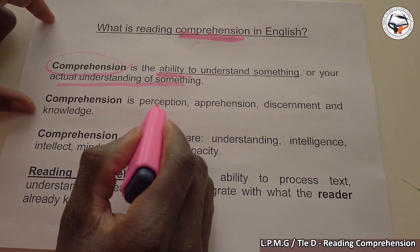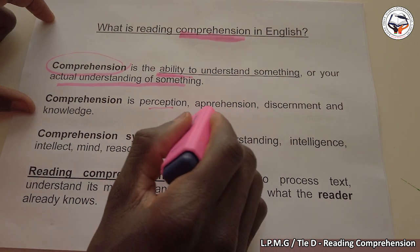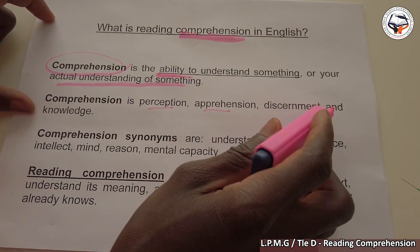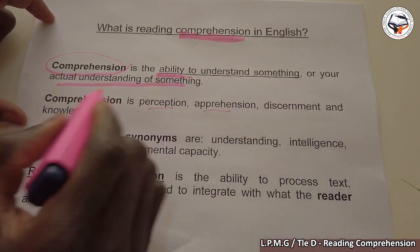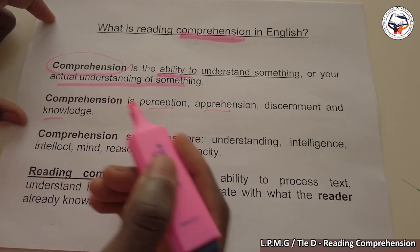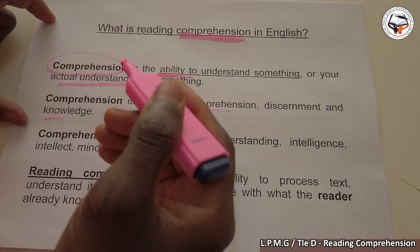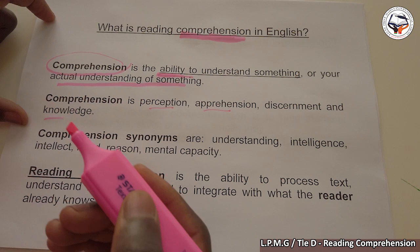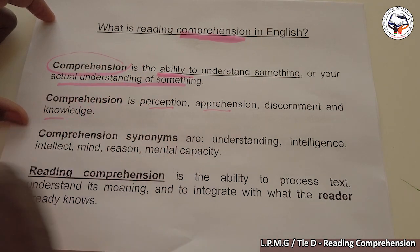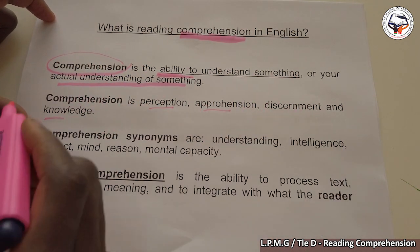Comprehension has another definition. Comprehension is perception, apprehension, discernment, and knowledge. You can take these as synonyms of comprehension. So the definition is: comprehension is perception, apprehension, discernment, and knowledge.